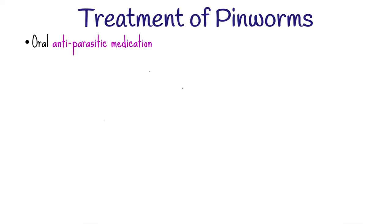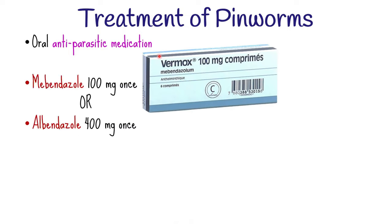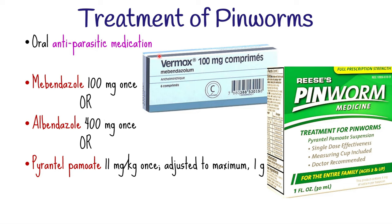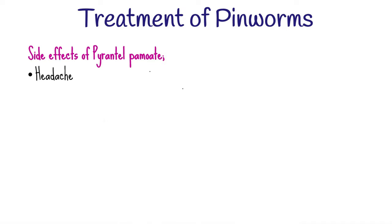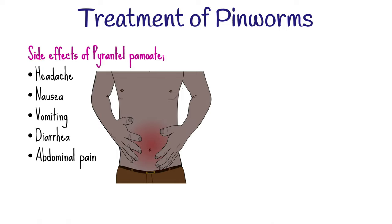Enterobiasis is treated with an oral antiparasitic medication that kills the worms completely after two doses. One of the following drugs can be given: mebendazole, albendazole, or pyrantel pamoate. The same treatment should be repeated after two weeks to kill worms that might have hatched from eggs ingested following initial treatment. Treatment of household members is advocated to eliminate asymptomatic reservoirs of potential reinfection. Some drugs like pyrantel pamoate have side effects including headache, nausea, vomiting, diarrhea, and abdominal pain.